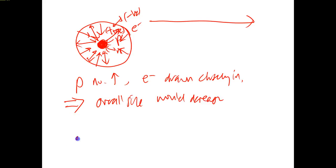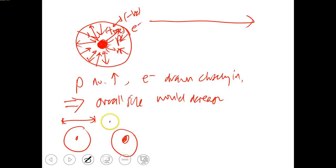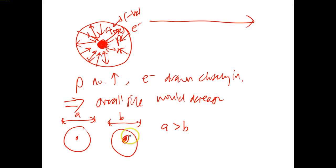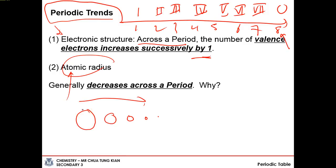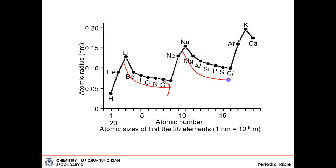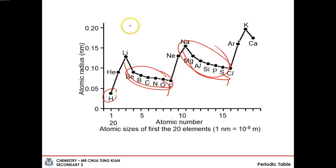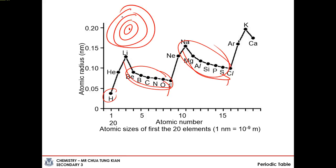So across the period, atomic radius decreases — atoms get smaller and smaller. Notice there is always a jump in size from one period to the next. This is simply because going from one period to the next adds one more shell: 1 shell, 2 shells, 3 shells. If you have more shells, obviously you will be bigger than the element in the earlier period, even without an increase in proton number.